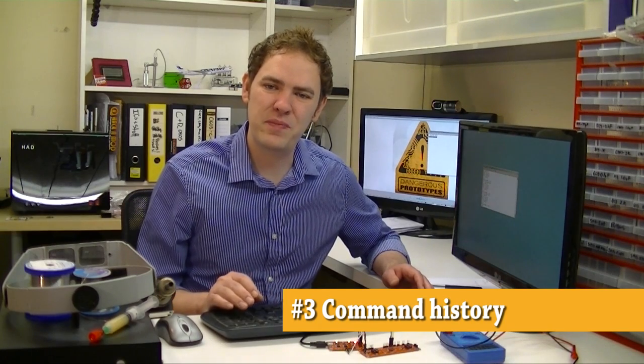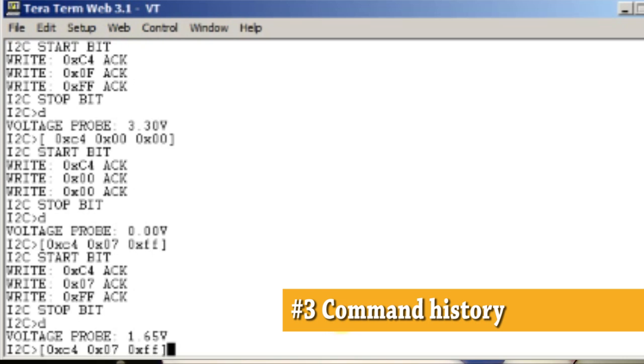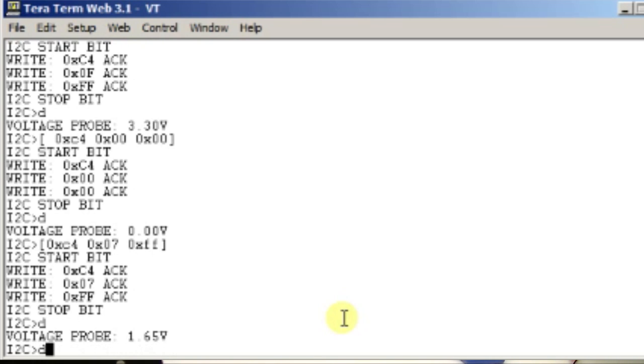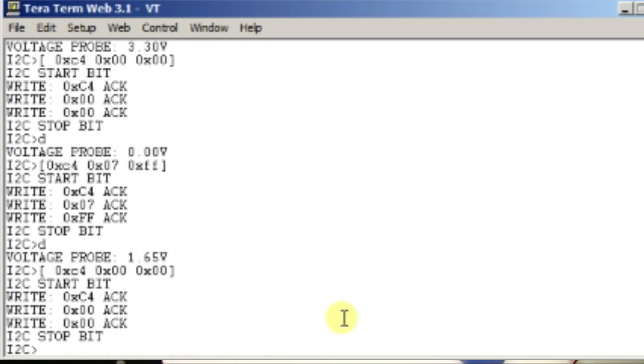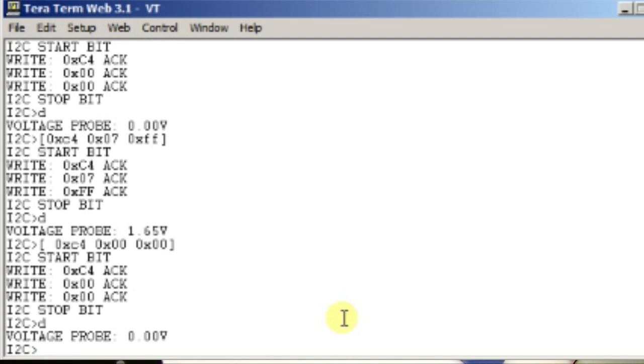My next favorite feature of the Bus Pirate is the history of the command prompt. By using the up and down arrow keys, we can scroll through everything that we've typed in so far and replay it. So here now we'll set the DAC back to 0, take another measurement, and it's 0 volts.